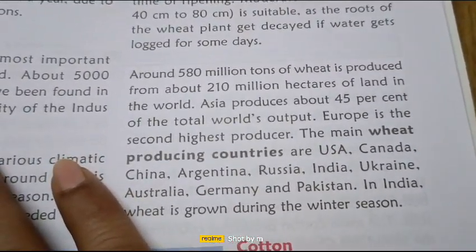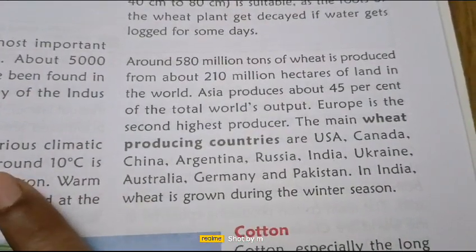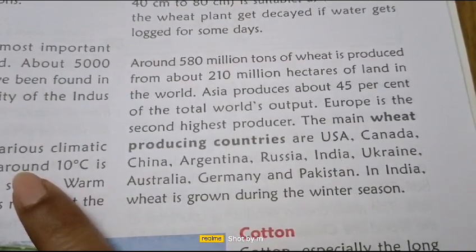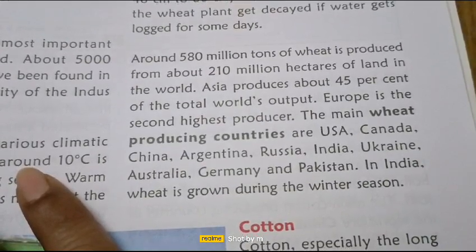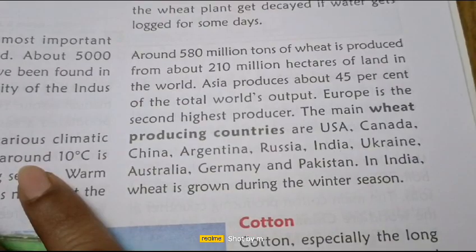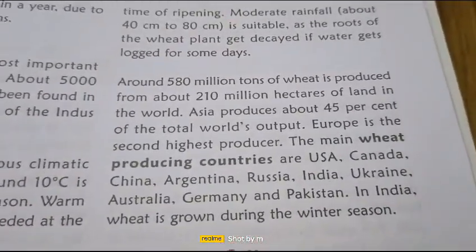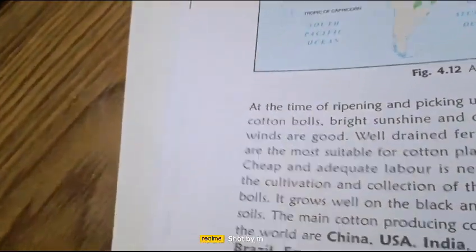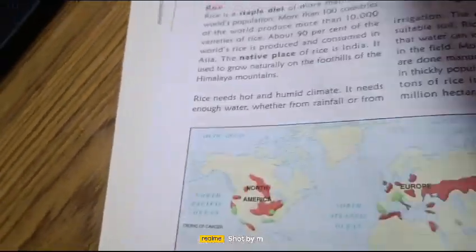Around 580 million tons of wheat is produced from about 210 million hectares of land in the world. Asia produces 45% of the total world output, and Europe is the second highest producer. The main wheat-producing countries are the USA, Canada, China, Argentina, Russia, India, Ukraine, Australia, Germany, and Pakistan. In India, wheat is grown during the winter season.